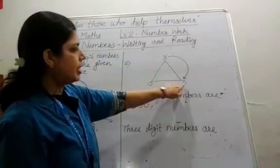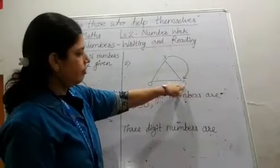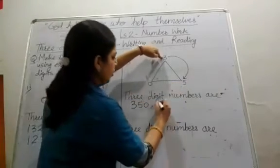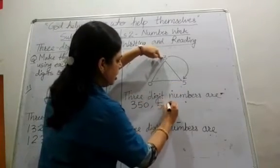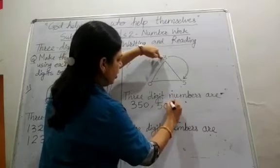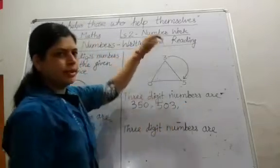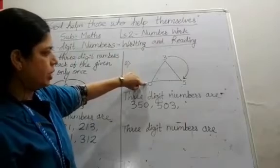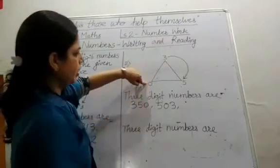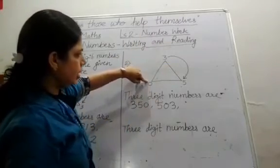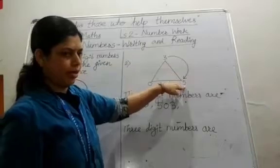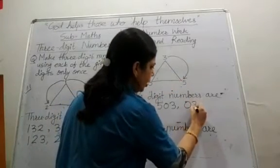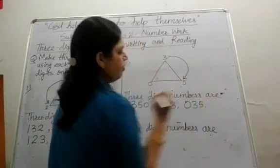The second number — start from 5, move clockwise — we get 5, 0, 3. Now the third number: start from 0 and move in a clockwise direction. We get 0, 3, 5.